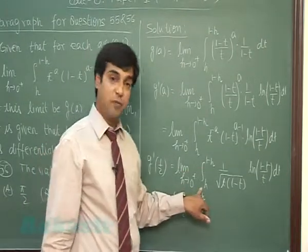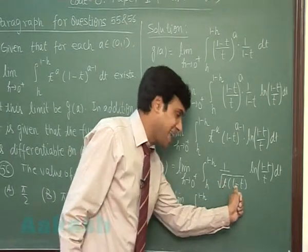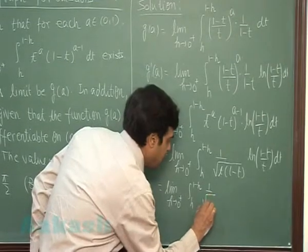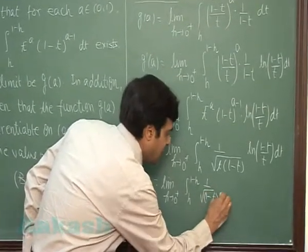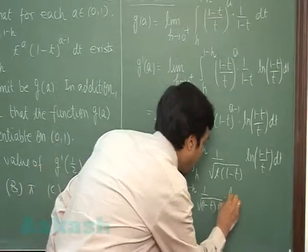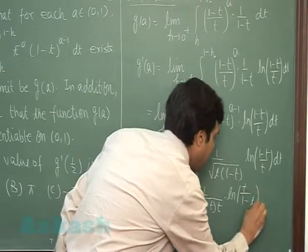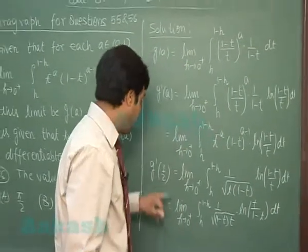a+b that is 1, so this becomes (1-t)·t, same term 1/√((1-t)·t) multiplied with log(t/(1-t)) dt.